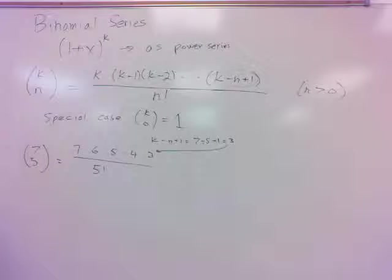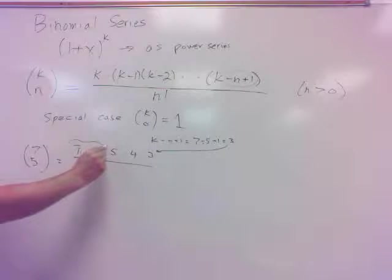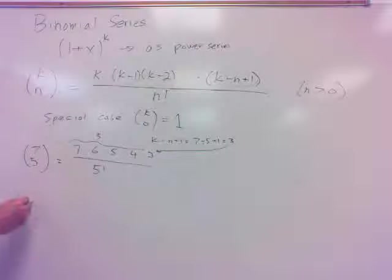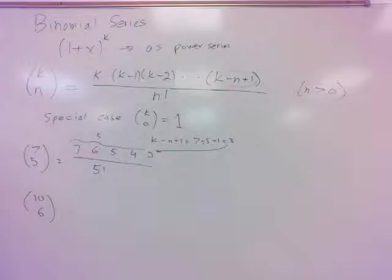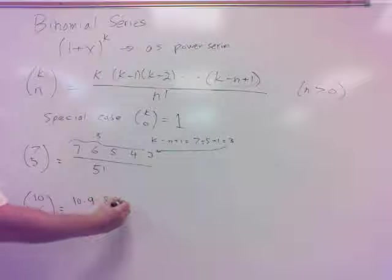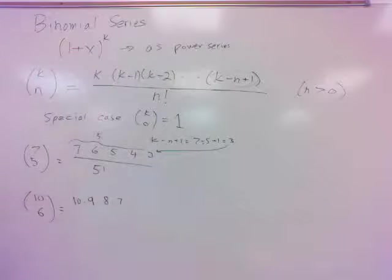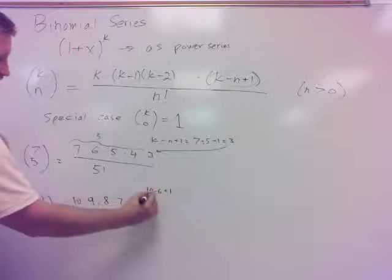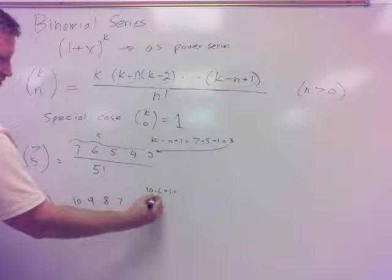But, interestingly enough, notice on the top that I do have 5 numbers there. But that can kind of help you if you're doing them, like I said, these numerical ones where you have both of them numbers. So this would be 10, then minus 1, minus another 1, minus another. So just keep multiplying on to that until you get to 10 minus the 6 plus 1.